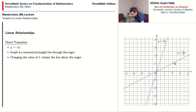If you make the value of k very large — say a thousand, ten thousand, or a million — the line just becomes steeper and steeper. It will never become vertical and will never cross the y-axis; it simply keeps getting steeper.